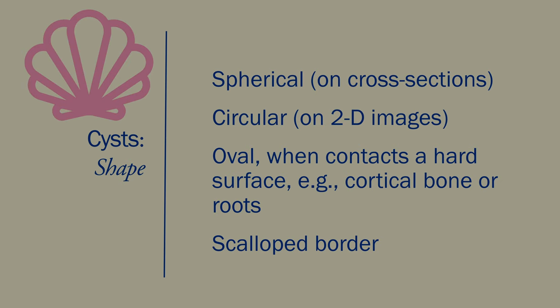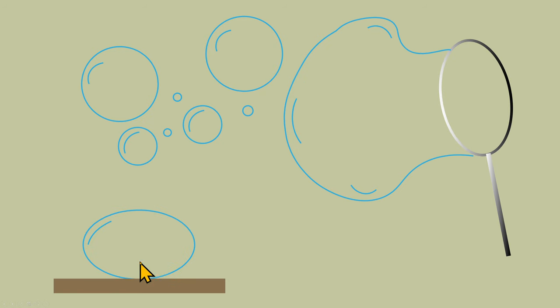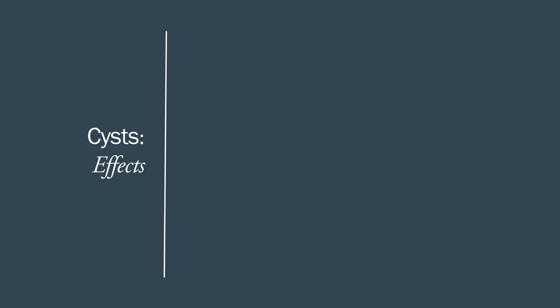The odontogenic keratocyst may take the shape of a tunnel, more like the shape of a hot dog. Some cysts may have a scalloped border, something like the outer border of a seashell. Consider a cyst as a soap bubble floating in the air — perfectly spherical. If a soap bubble lands on a hard surface, it becomes oval. On a 2D image where you cannot see the buccal and lingual cortical plates, if you see a cyst with an oval shape, you can assume it may be touching the buccal or lingual cortical plates.